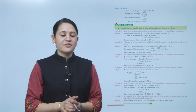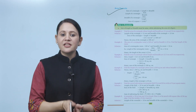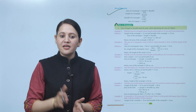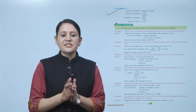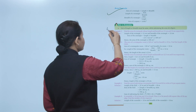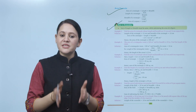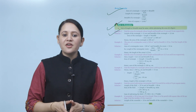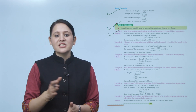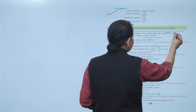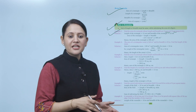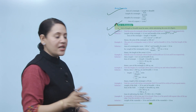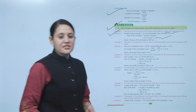Next is area formula. Area of a rectangle equals length times breadth. To find the length, divide area by breadth; to find the breadth, divide area by length. Area of a square equals side squared. Note: the units of length and breadth must be the same when calculating area. Example: find the area of a rectangle with length 15 cm and breadth 12 cm. Area equals 15 times 12, which is 180 square centimeters.